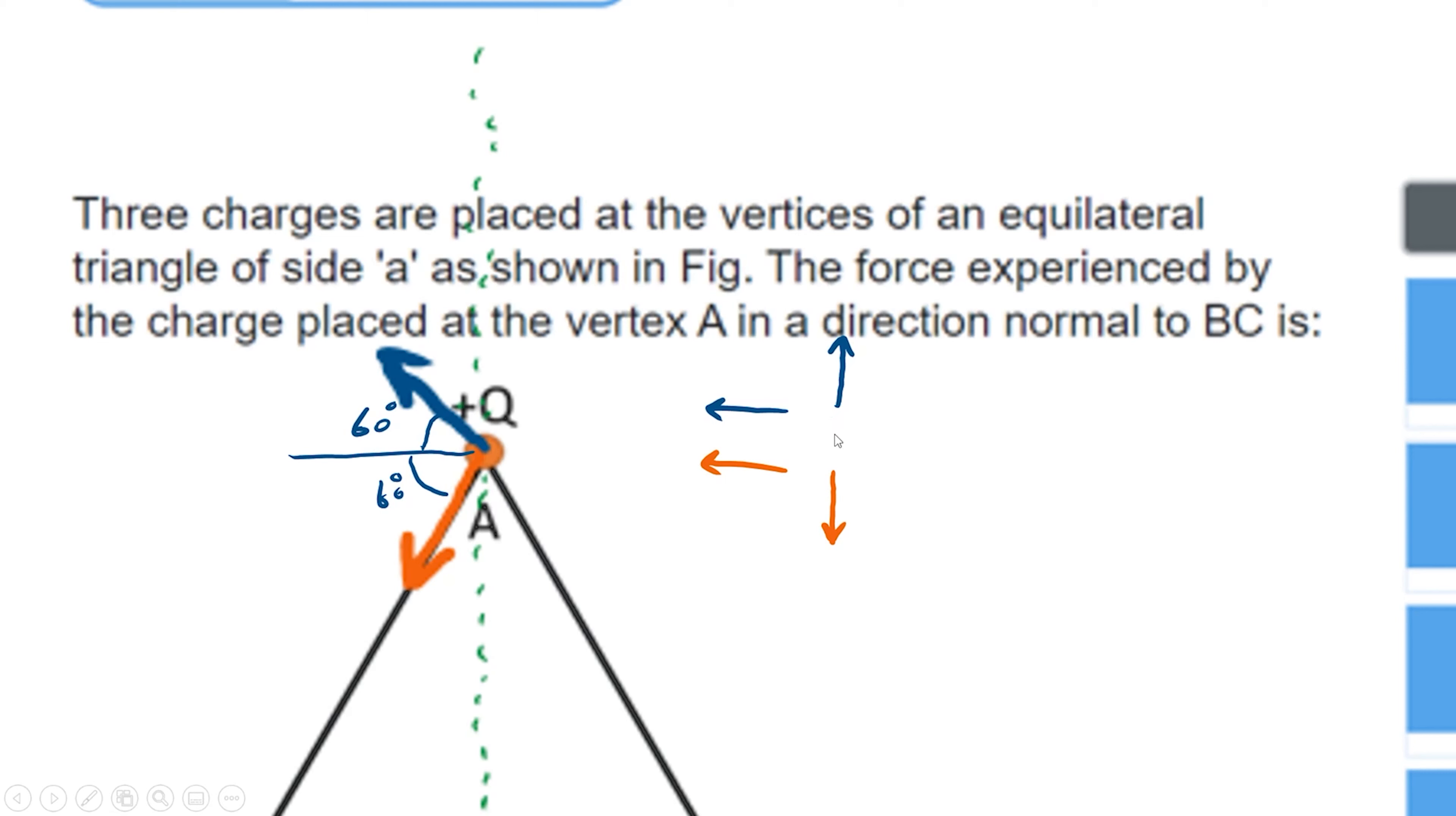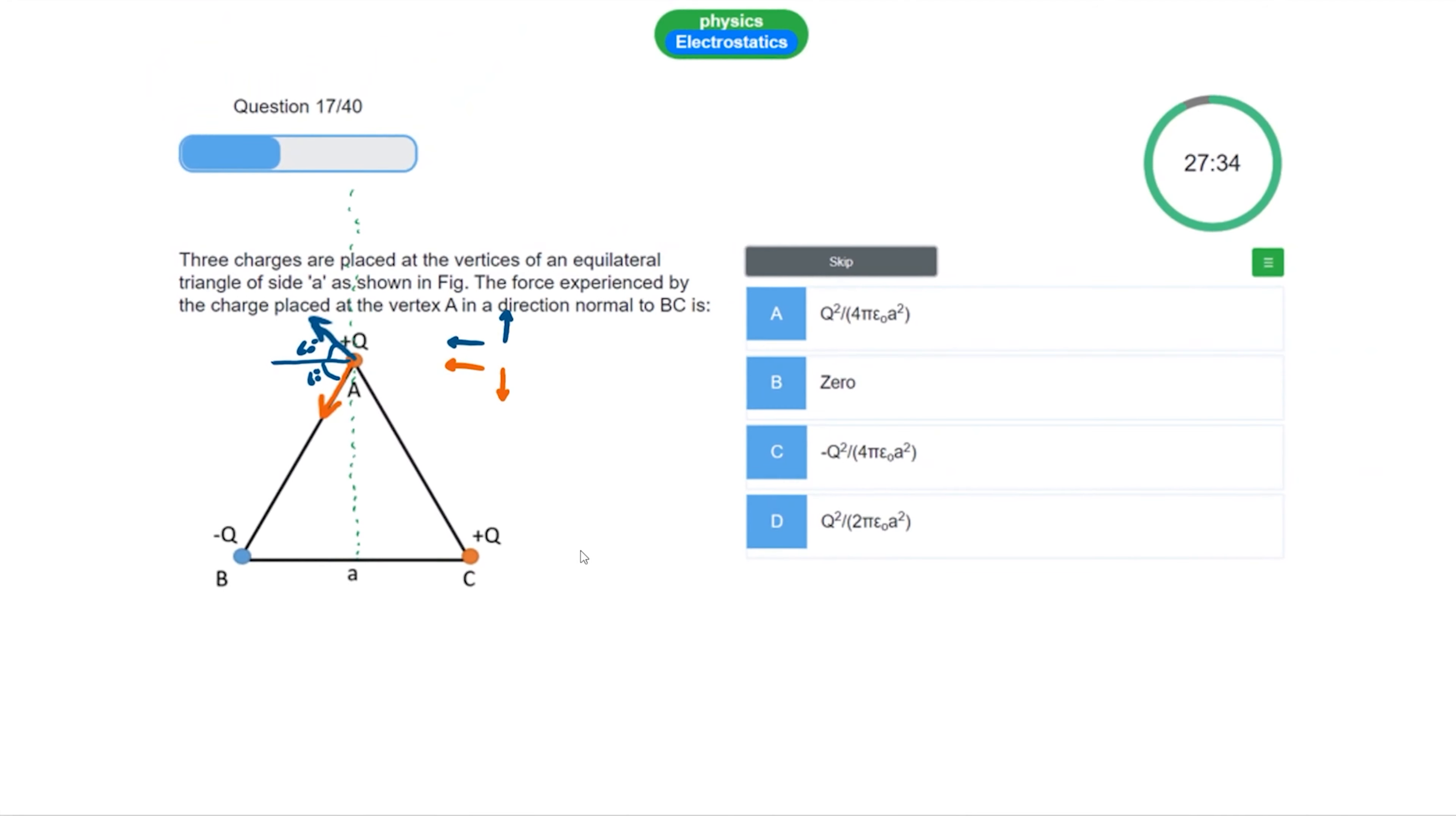When we add up the y-components, it will be zero. In the x-axis, we need to add up only.